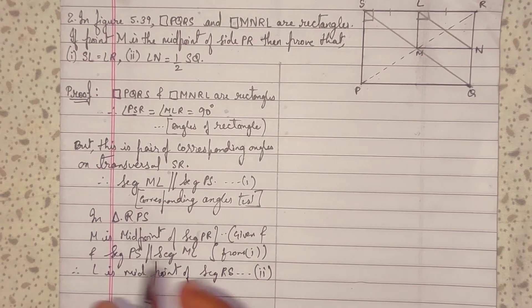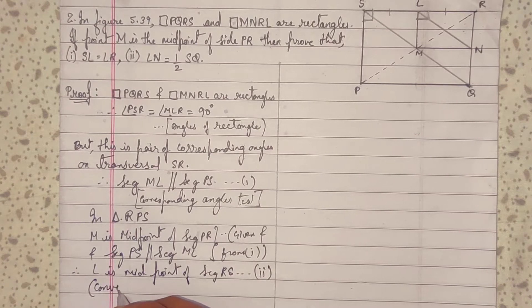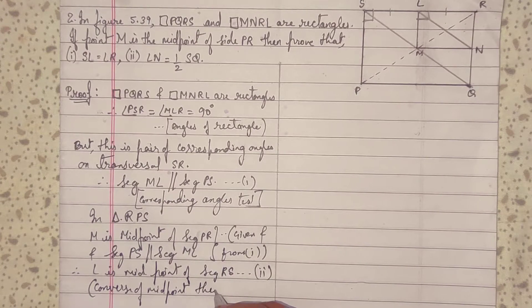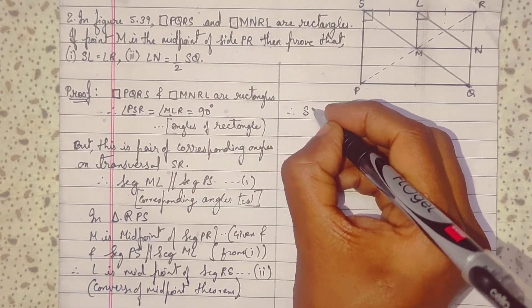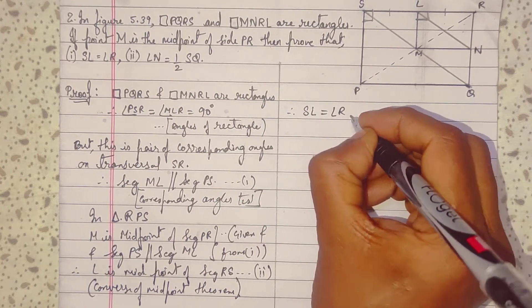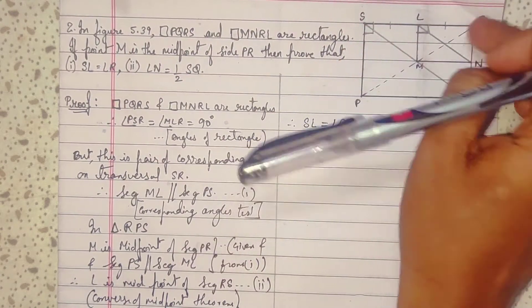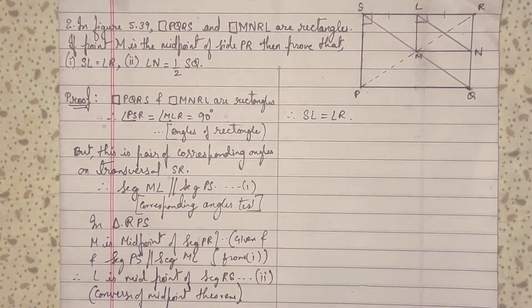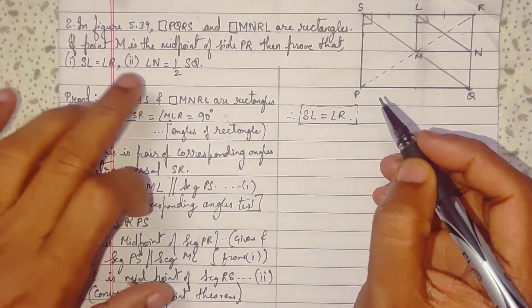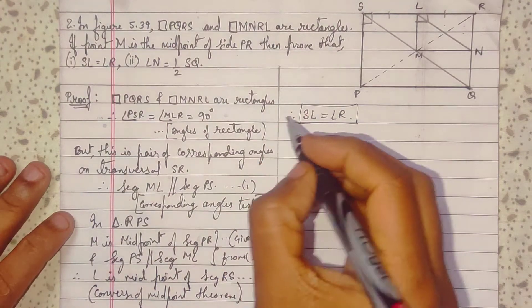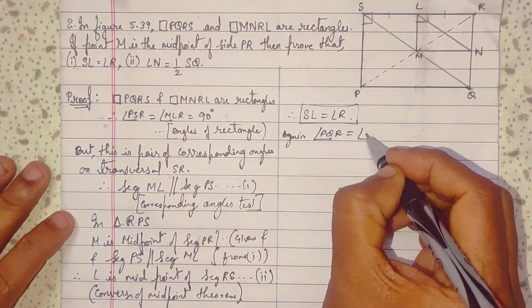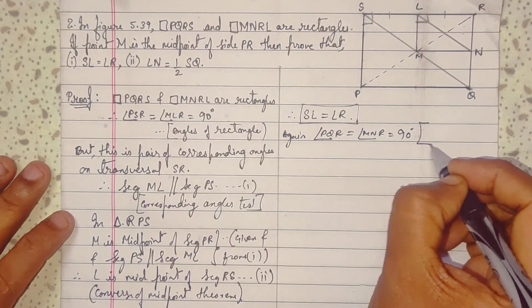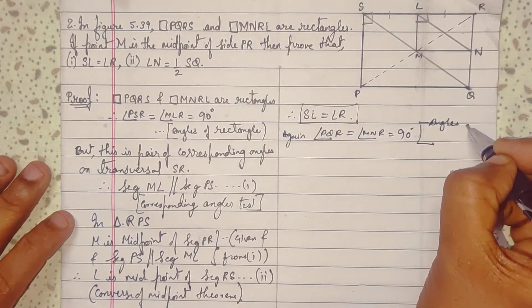Since L is the midpoint of RS, therefore SL equals LR. The first part is proved. Now the second part.